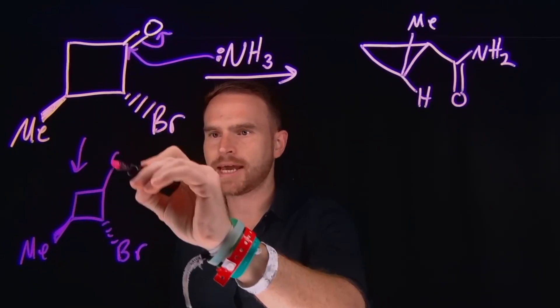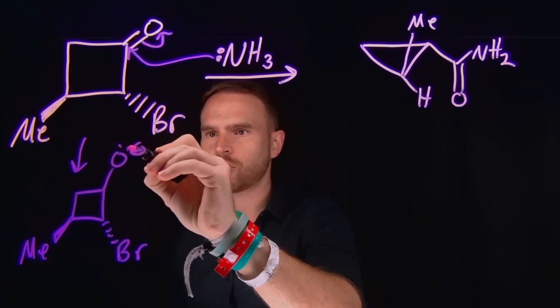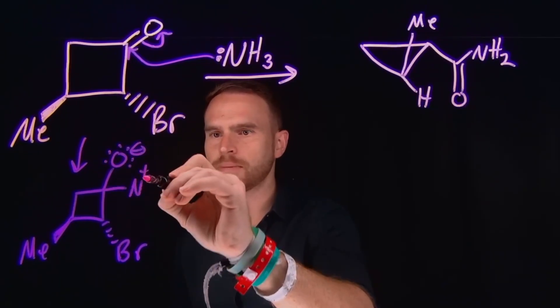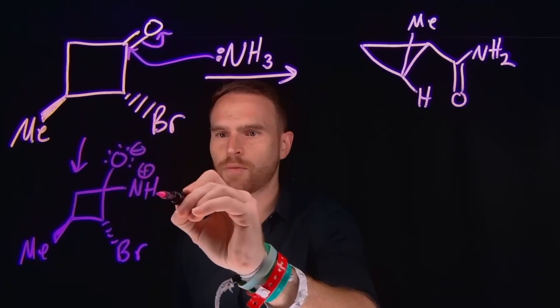So all of these other substituents, the bromide and the methyl group, remain the same, except now we have this negatively charged oxygen with three lone pairs on it, and now we have this nitrogen which is going to be positively charged because it's got four bonds to it.